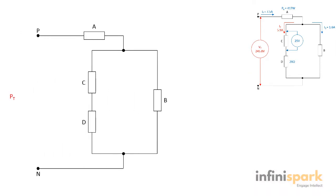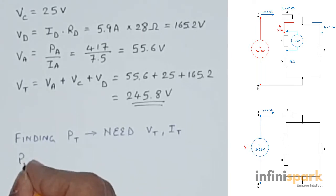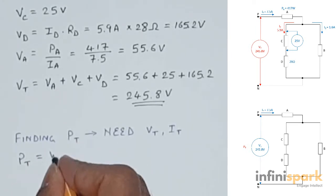To find the power dissipated by the circuit, we need the supply voltage VT and the total current IT. We will use the power formula here. PT is equal to VT times IT.